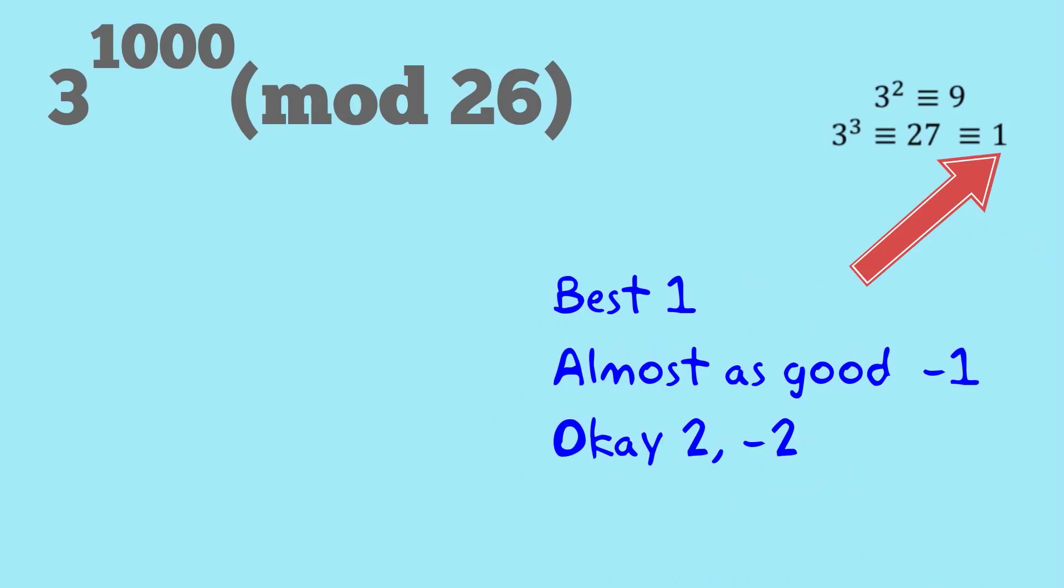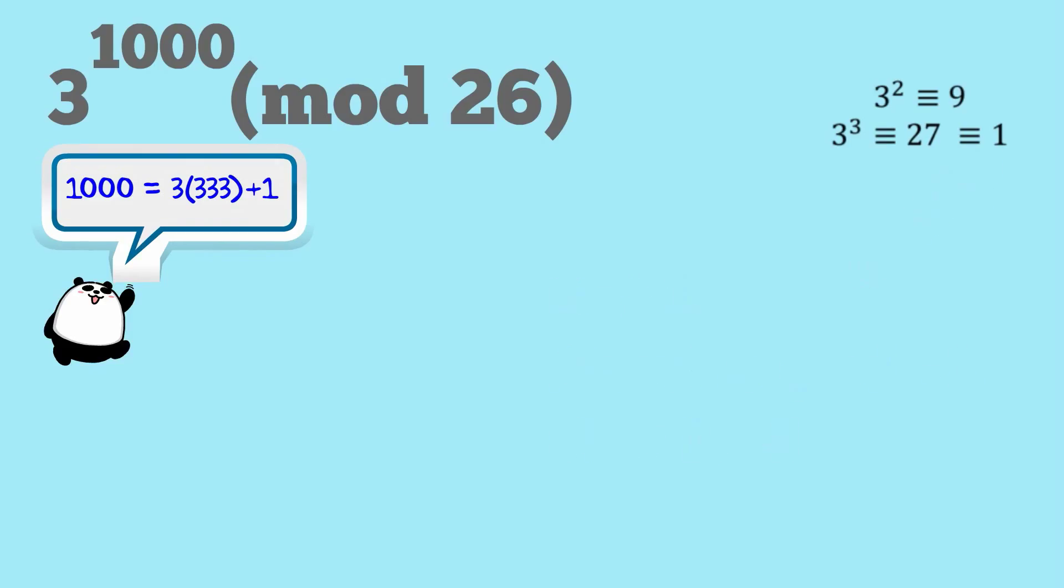But I've got to 1, which is the best one. Then I just recognize that 1000 is equal to 3 times 333 plus 1. So now I can solve the problem.